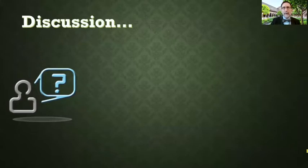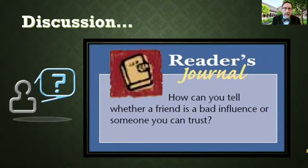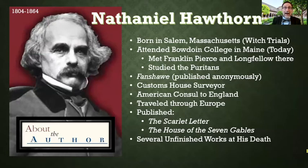Here's our think-about question from the textbook: how can you tell whether a friend is a bad influence or someone you can trust? I'm sure most of you in high school have had a friend at some point that you trusted that maybe your parents didn't want you to trust, or maybe you trusted a friend that later on you learned was untrustworthy. In this particular story our main character is going to trust a number of people — some are trustworthy, some are not — and sometimes he may be trusting the wrong ones.